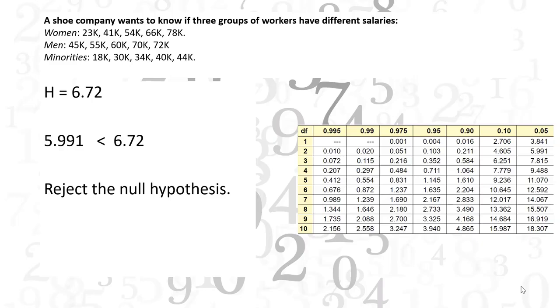In this case, 5.991 is less than 6.72, so you can reject the null hypothesis. Thanks for checking in, and I'll see you in the next video.